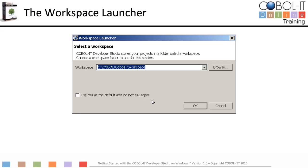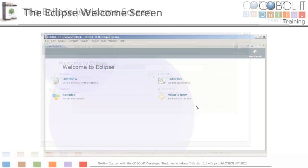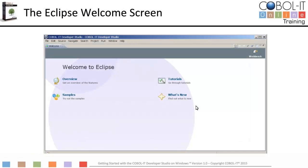The Eclipse platform stores your projects in a folder called a workspace. When first started, Eclipse prompts the user to locate their workspace. Enter the location of your workspace and click OK to advance to the welcome screen. On the welcome screen, click on the arrow titled Workbench in the upper right-hand corner to open the Developer Studio.